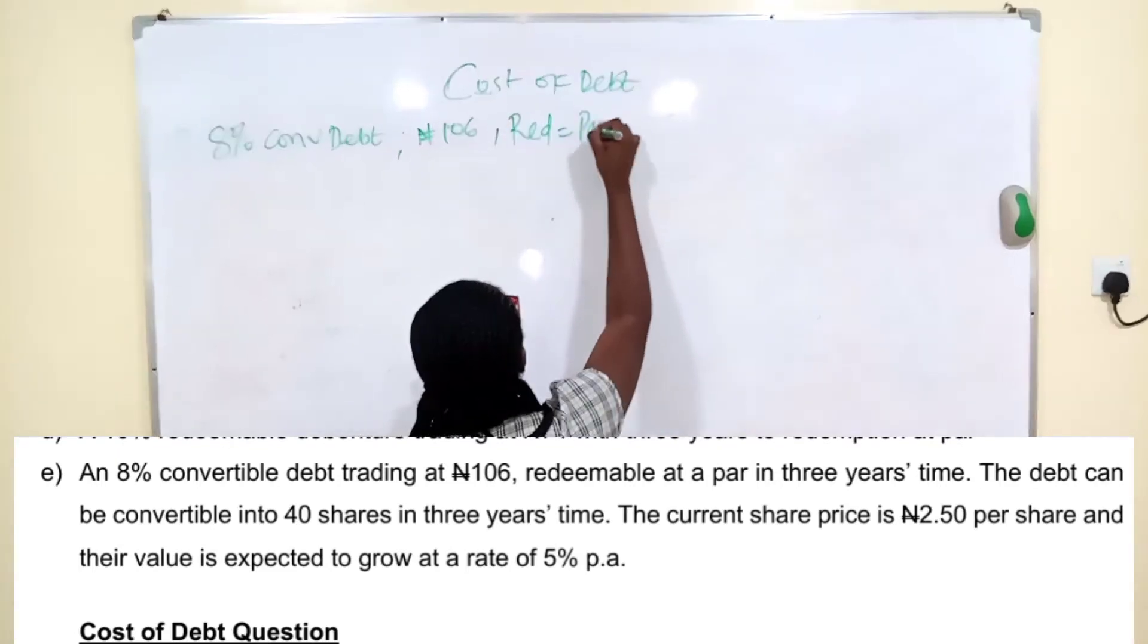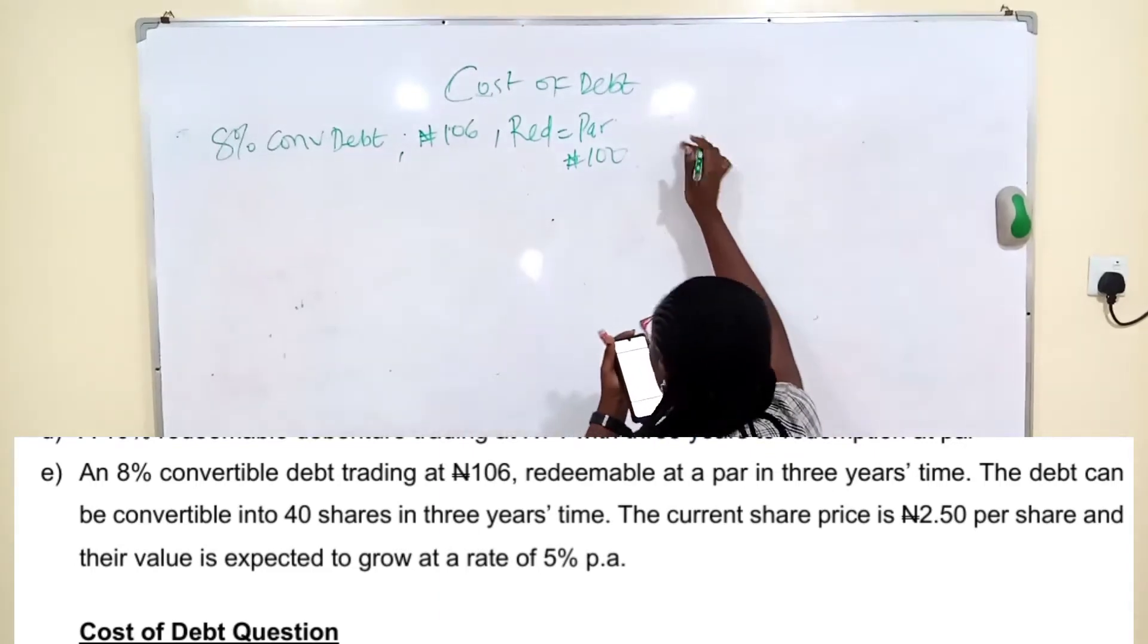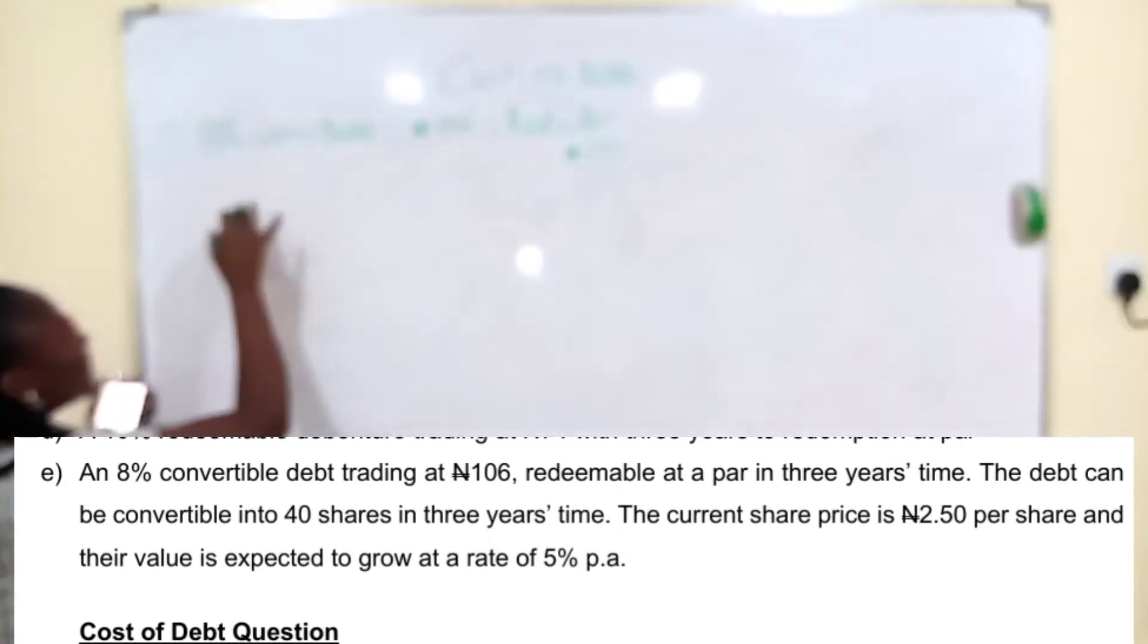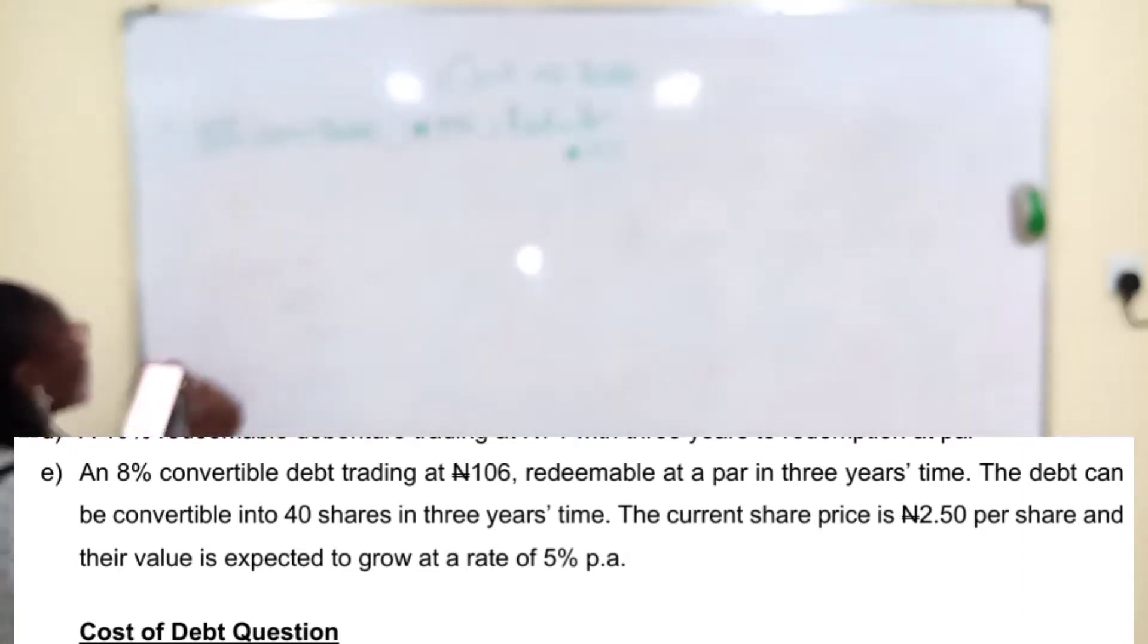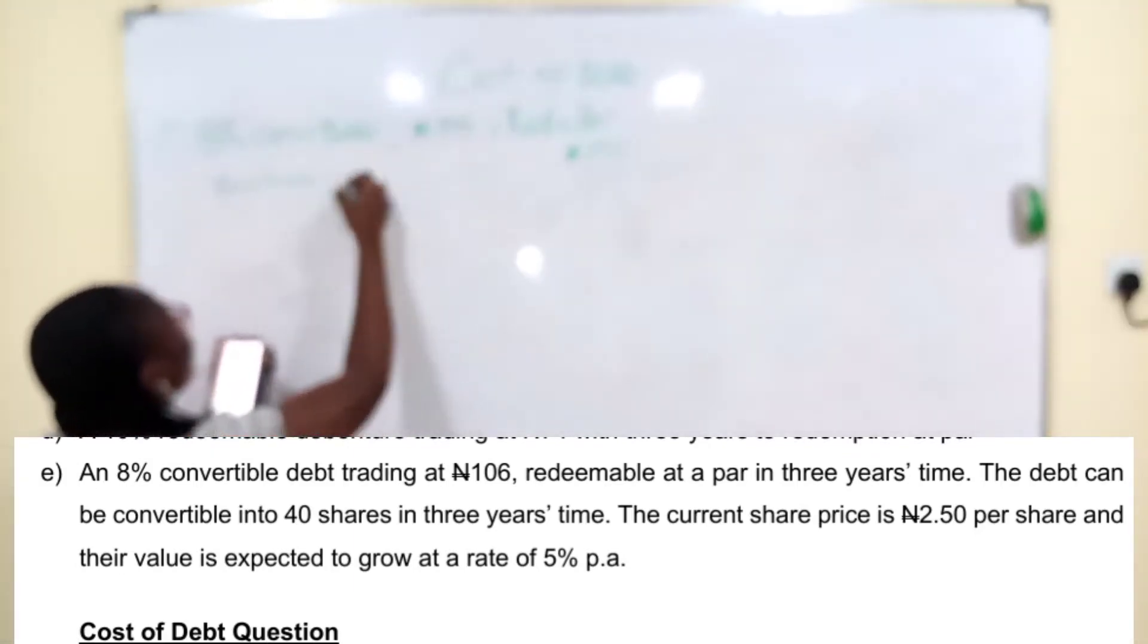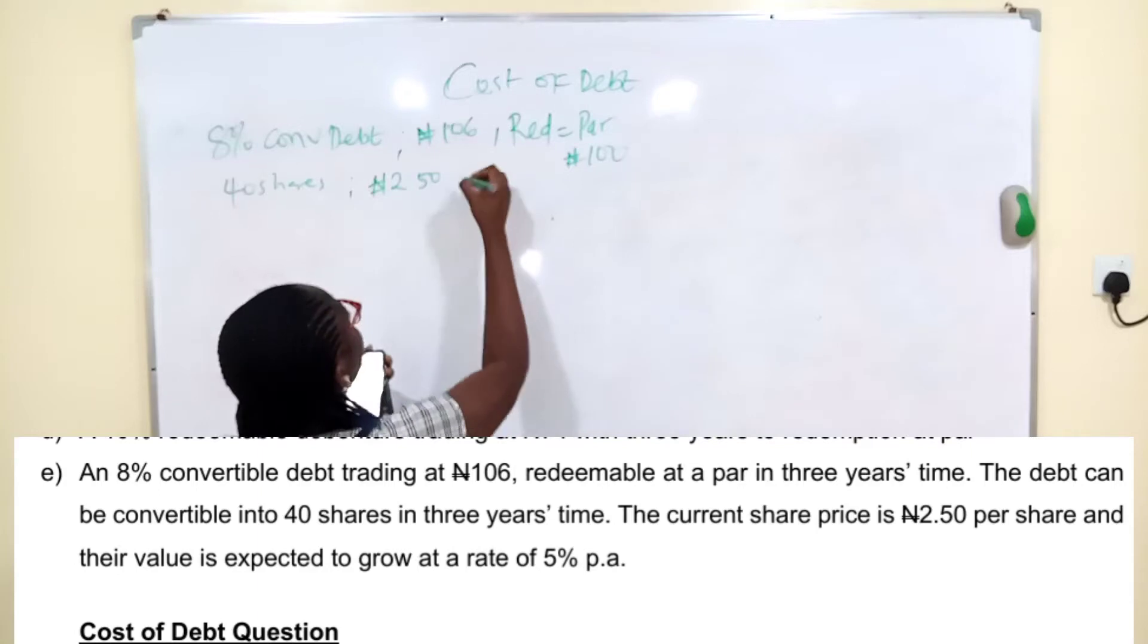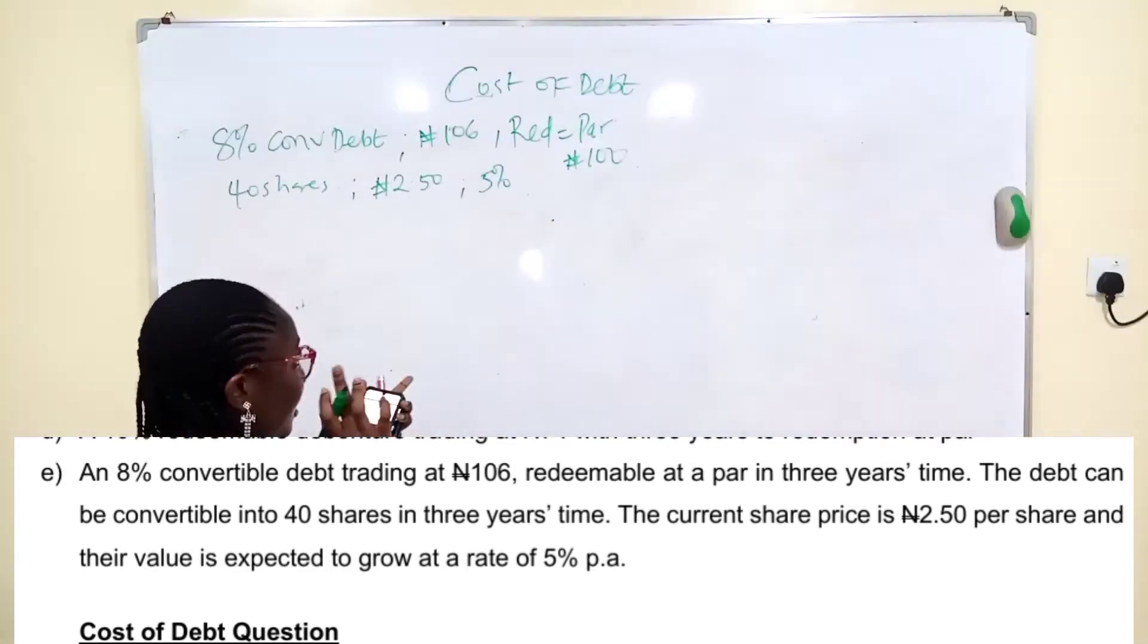Redeemable at what? At par. That is, redeemed at 100 in 3 years time. So N is 3 years. Then you say the debt is convertible into 40 shares. That is, after the whole number of years, after the 3 years of the debt life, the debt holder can choose to convert to 40 shares in 3 years time. Then you say the current share price, now, now, now, is 2,950 combo, and it's expected to grow at the rate of 5%.